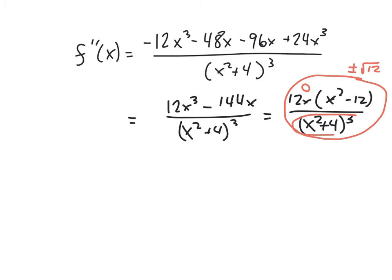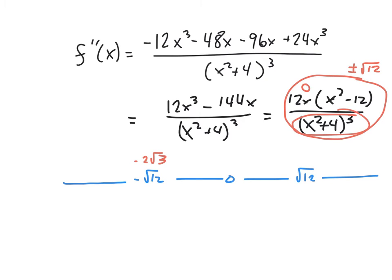There are no undefined values since the denominator is always positive. So we do a sign diagram on the three candidates: negative square root of 12, 0, and square root of 12 — which equals negative 2 root 3 and positive 2 root 3. We pick representative values: negative 4, negative 1, 1, and 4, and plug them into the factored numerator 12x times x squared minus 12, since the denominator's sign doesn't change.